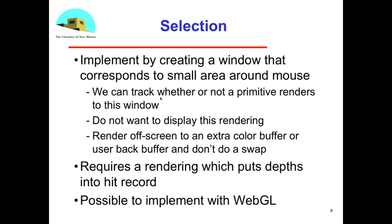What I can do is as I'm rendering, I can keep track of whether a given primitive renders into this window or not. That's something I can do within OpenGL or WebGL. And then I could say, that's how I form the hit list. If I'm changing the window and it's not the window that I really want displayed, then I don't want to display this rendering.